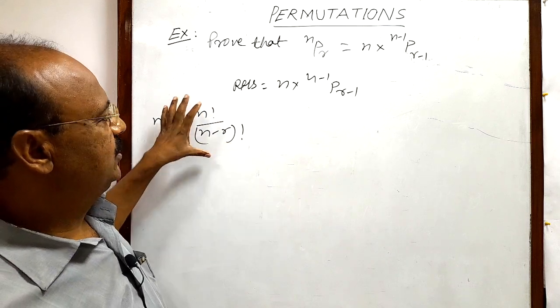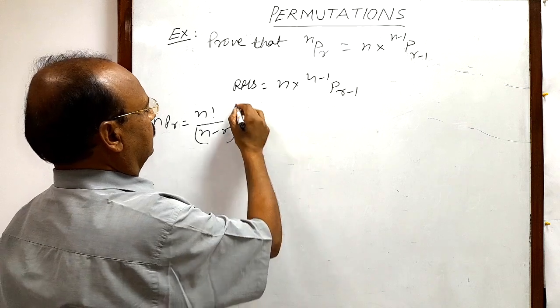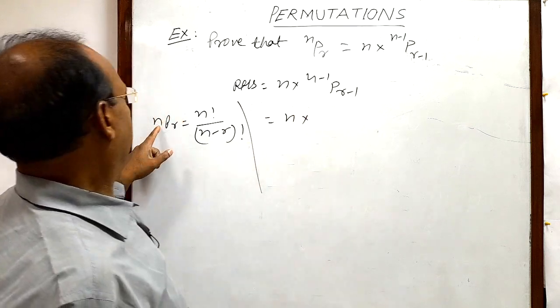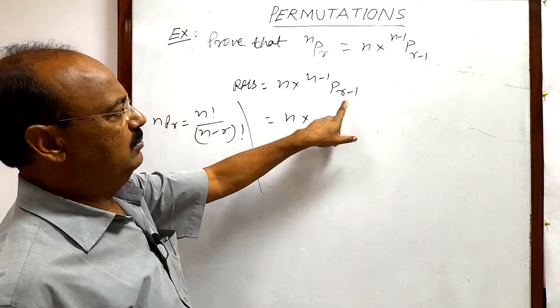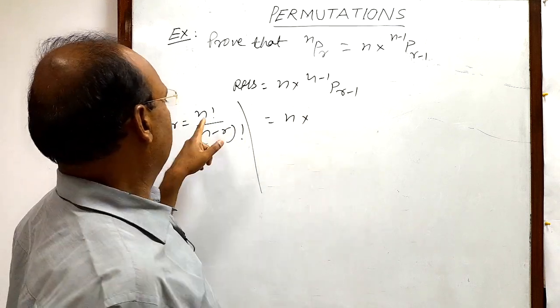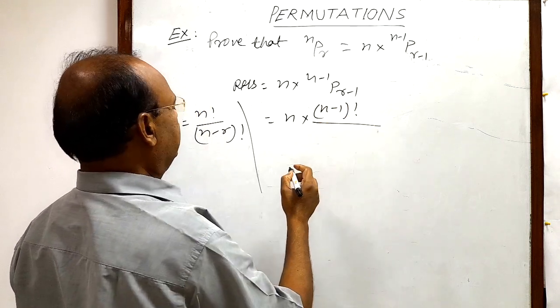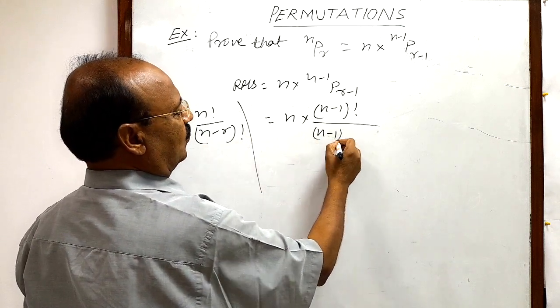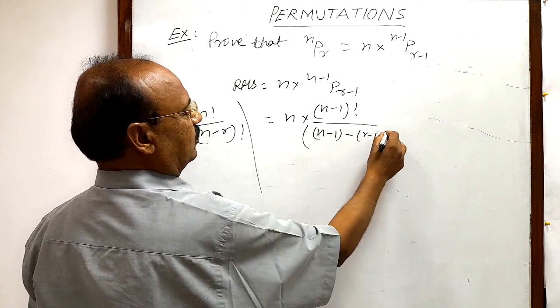So let us use this formula for expanding this expression and this is equal to n into, in place of n we are having n minus 1 and in place of r we are having r minus 1. So in the numerator here we will write n minus 1 whole factorial and in the denominator in place of n minus r we will write n minus 1 minus r minus 1 whole factorial.